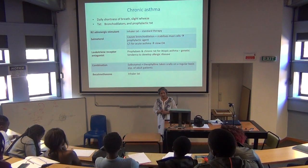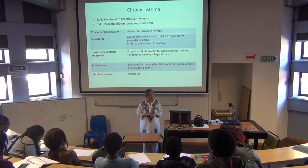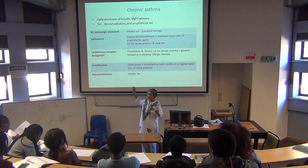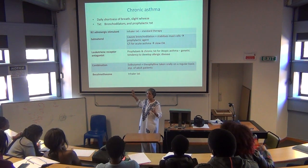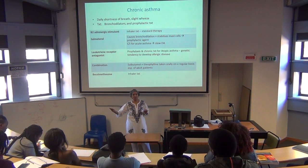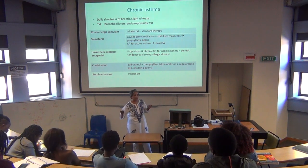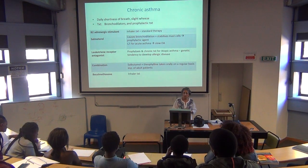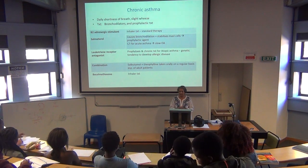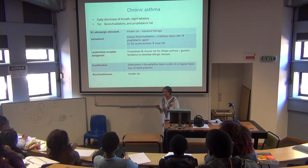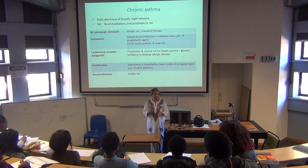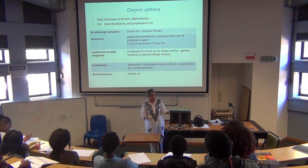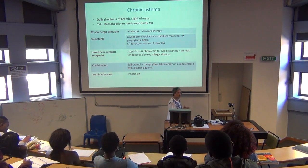Another agent we can use is a leukotriene receptor antagonist. Leukotrienes are also inflammatory mediators, so if we prevent them from attaching to the receptor, it is good as part of prophylactic treatment, especially for allergic asthma. We also spoke about combination therapy — salbutamol and aminophylline — and if needed, we open up further treatment options.